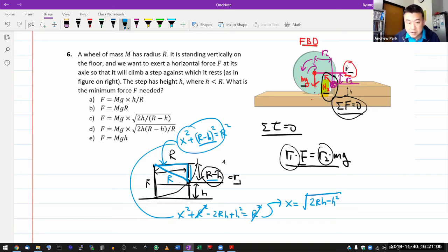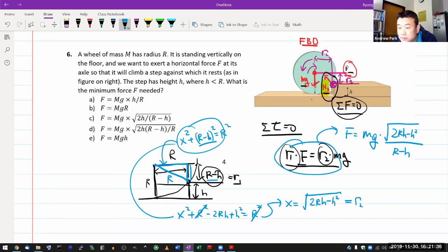So that's the level arm for gravity or R2. So solving for F here, you get F is equal to mg times the ratio square root of 2RH minus H squared over R minus H. And I think if you factor out one factor of H, then you can cancel out one factor of R minus H. So you get mg times square root of, wait, is that it?